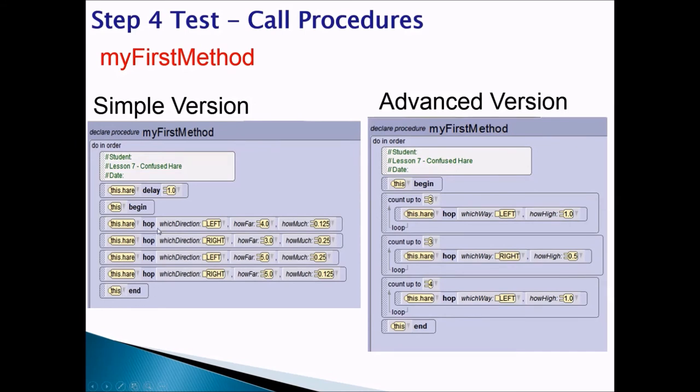Now, your hop procedure will have parameters, which direction, how far, how much. Now, you don't have to have exactly the same parameters like I have used. You can have your own parameters. Now, if you did the advanced version, you will still have the beginning, you will have an end, and in between you will have some hop statements. And in my hop procedure, I have created parameters here, which way, how high.